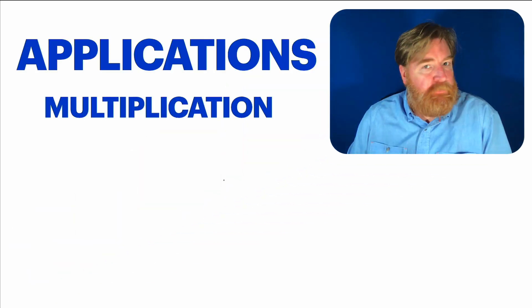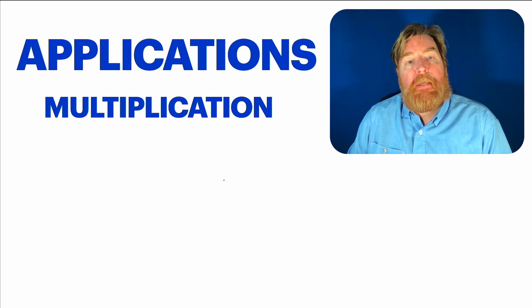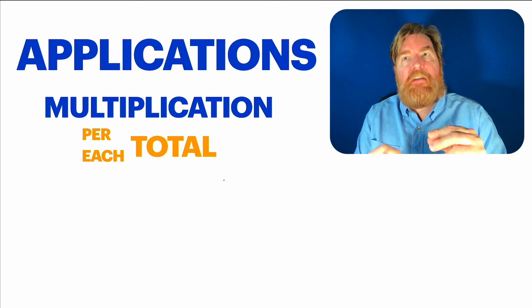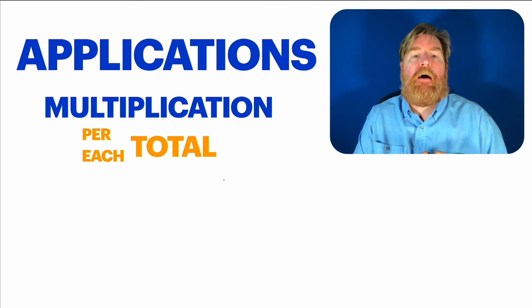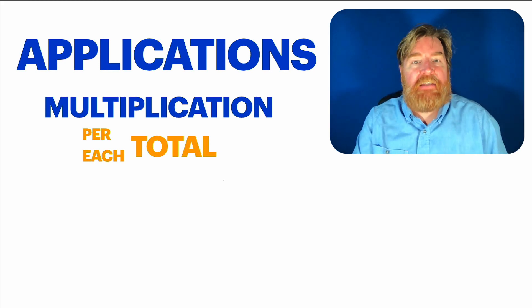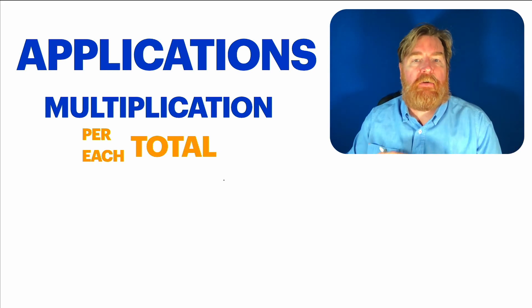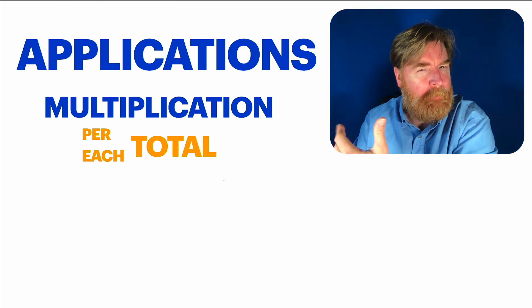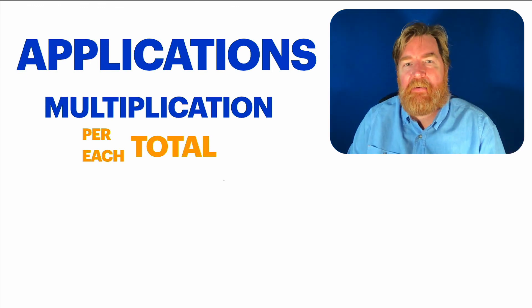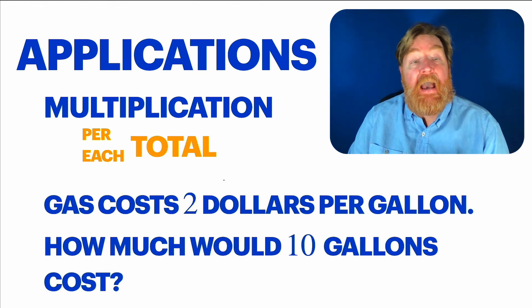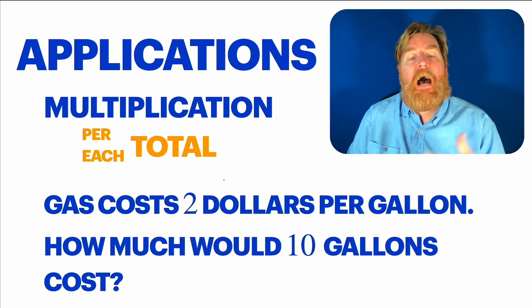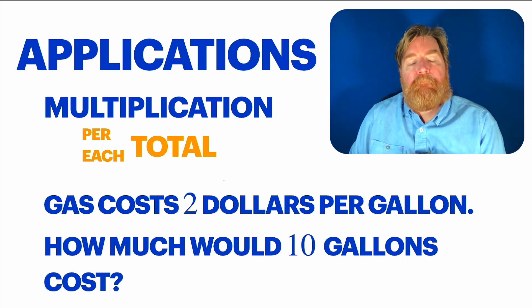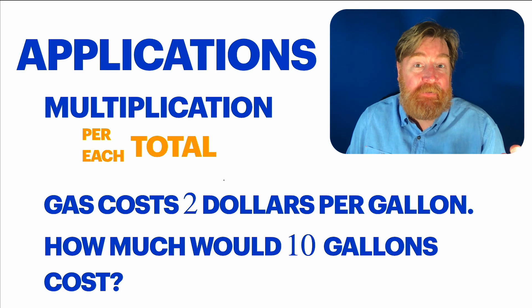Before I leave you, I just want to talk very briefly about applications of multiplication. What you'll find is that shows up when you're given some information about one, one item. How much each thing weighs or per, per one. Those are common terms you might see in multiplication problems and then at being asked for a total. Like for example, it's easier to give you an example than to talk about it. Let's say gas costs $2 per gallon. How much would 10 gallons cost? Well, 10 times two, that gives me 20. So it would cost $20.